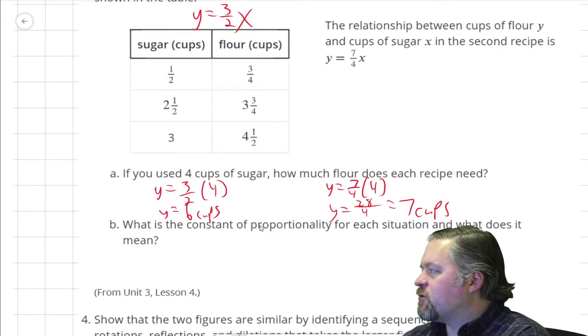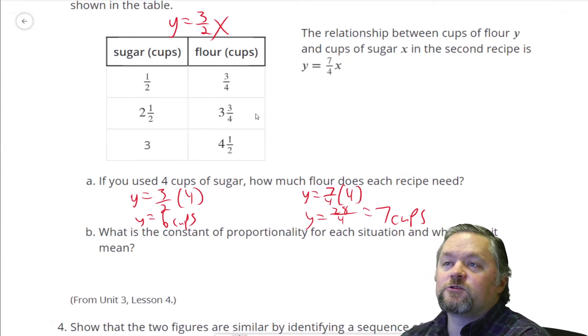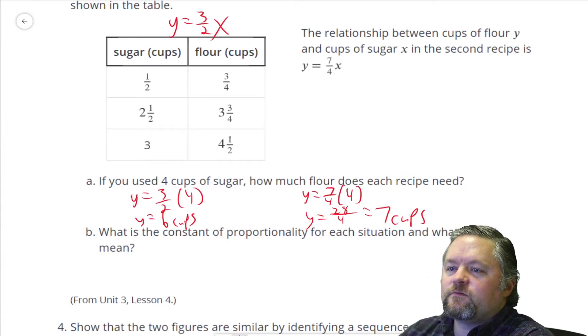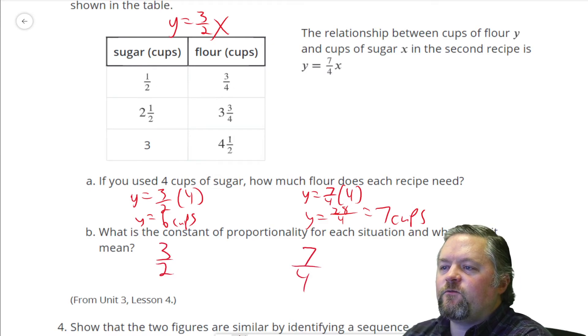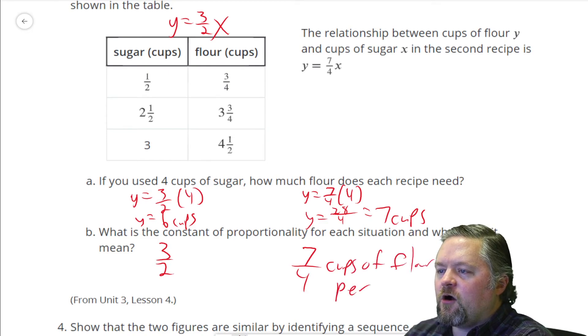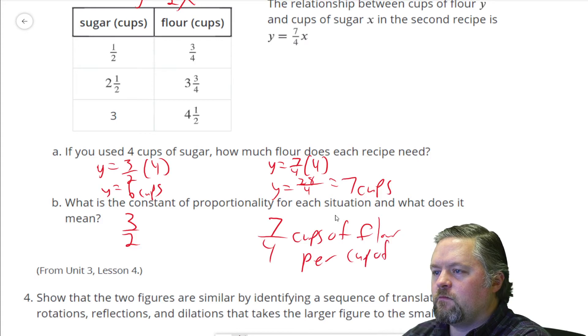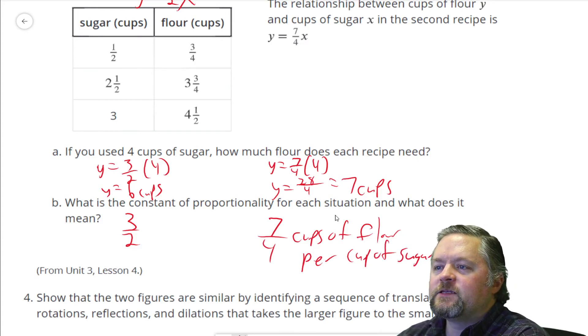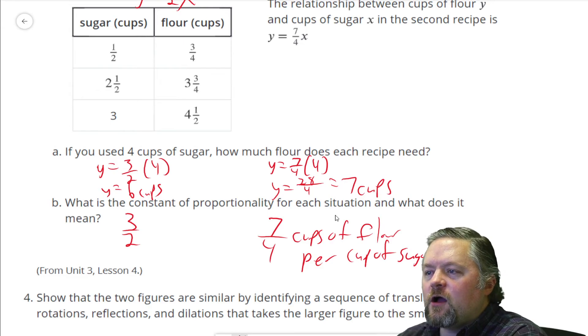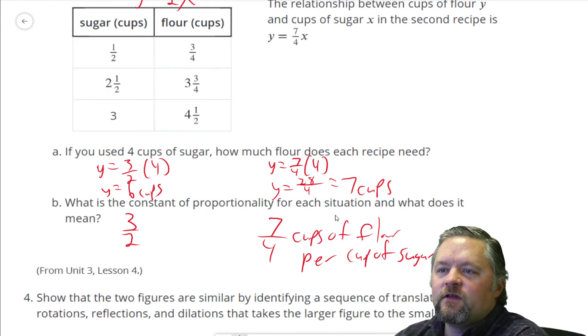What's the constant of proportionality for each one and what does it mean? Constant of proportionality, slope. Three over two for the first one, seven over four for the second one. And it means we use seven over four cups of flour per cup of sugar. Same thing for this one, we use one and a half, three over two cups of flour per cup of sugar.